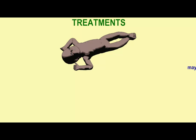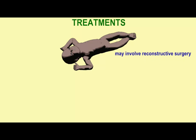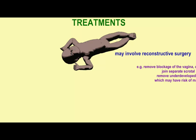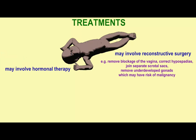Treatments for ambiguous genitalia could involve reconstructive surgery — for example, removing blockage of the vagina, correcting hypospadias, joining separate scrotal sacs, and removing underdeveloped gonads which might have a risk of malignancy.